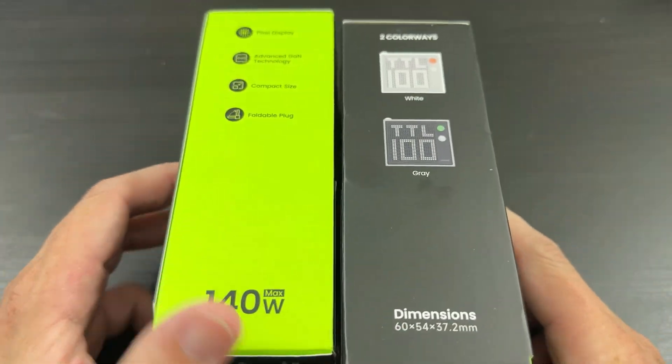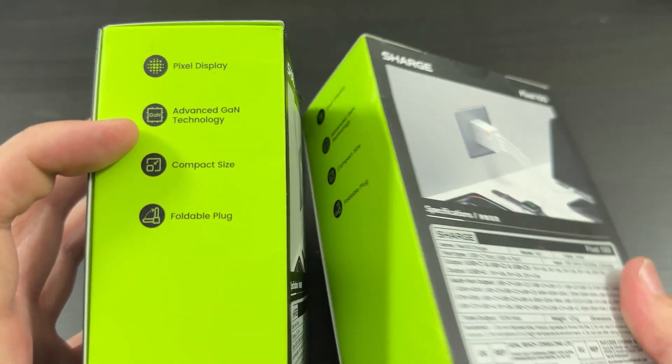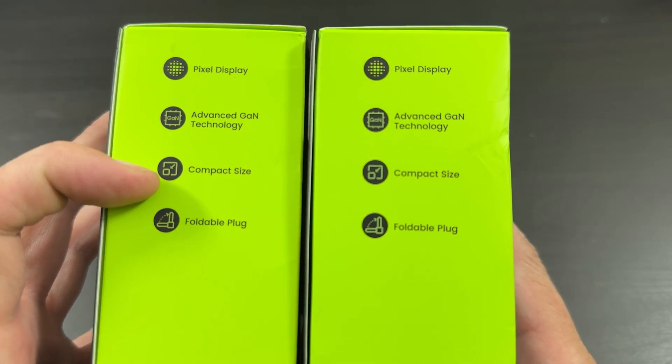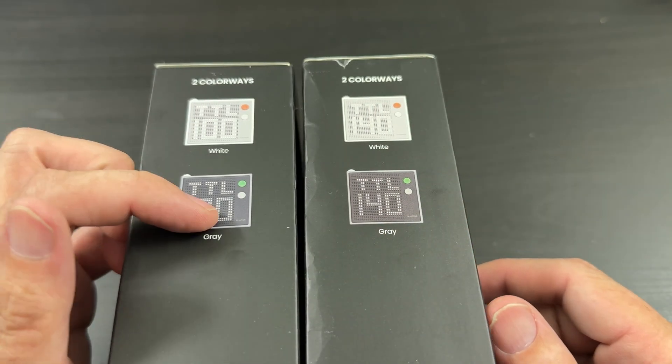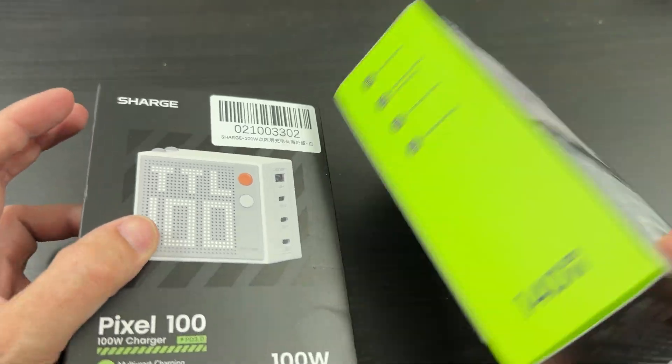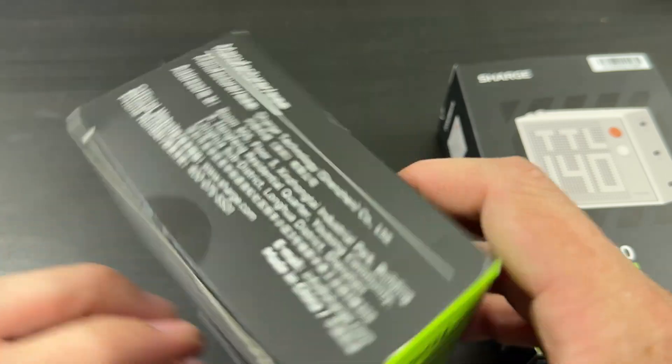So let's take a look at the sides of the box here. Pixel display, advanced GAN technology, and compact size, and foldable plug. 140, 100. Then there's the gray one, there's the white one. I definitely like the gray better. I got both whites, but oh well. These were sent to me for free, these were reviewing it, so just keep that in mind. I am providing my honest feedback in testing though.